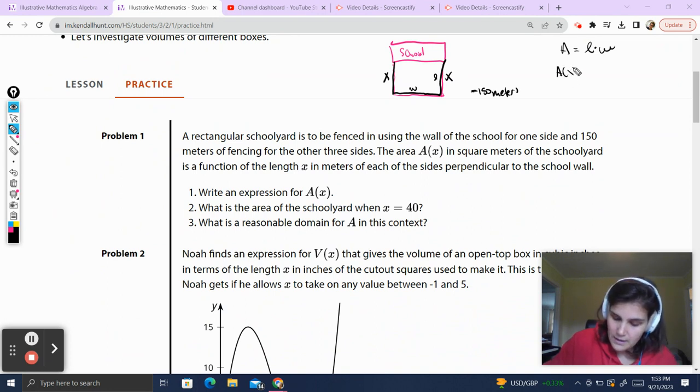I always like to draw a picture even before I finish reading the question because it helps me visualize it as I'm taking in the content of the question. Some people like to read first and then draw. The area in square meters of the schoolyard, so I know I'm a rectangle, I know area equals length times width. This is going to be my length, that's going to be my width, is a function of the length x in meters of the sides perpendicular to the school wall. So this guy's going to be x and this guy's going to be x.